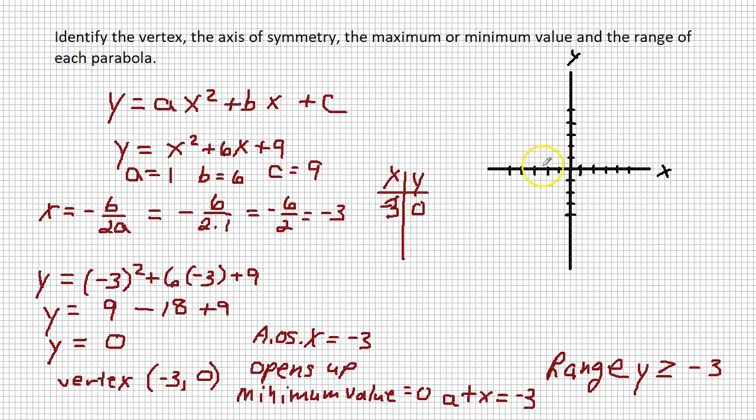So 1, 2, here's 3, 0 right there. Every square is 1 unit, so every tick mark is 2 units. Now we can just choose a couple values to the left and a couple to the right. One of the best values to choose is plug in 0. If you plug in 0 for x, our y-intercept is 9.